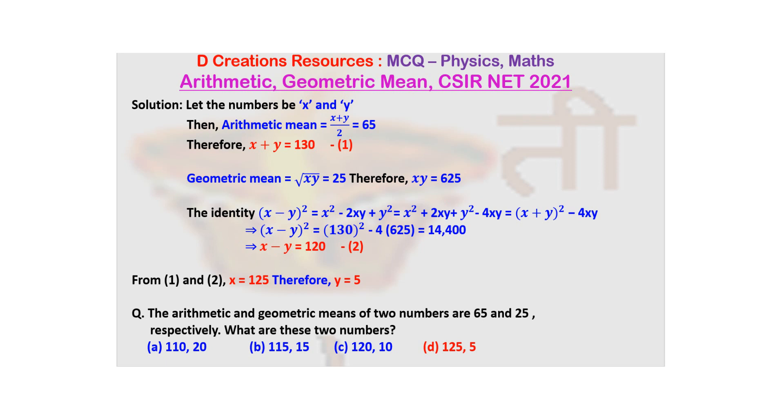16,900 minus 4 times 625. Now 625 times 2 is 1,250, and 1,250 times 2 is 2,500. So basically 16,900 minus 2,500 gives you 14,400.